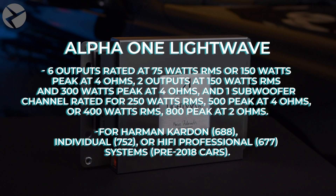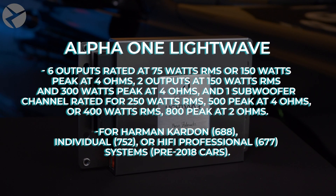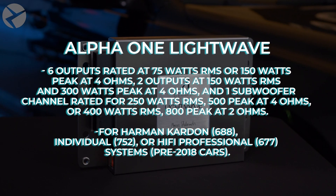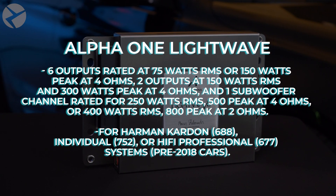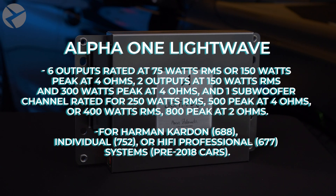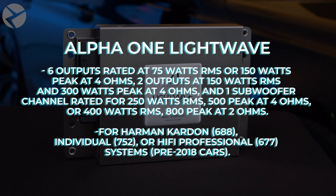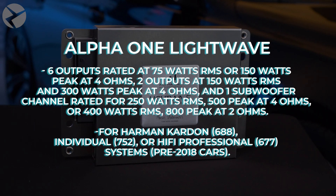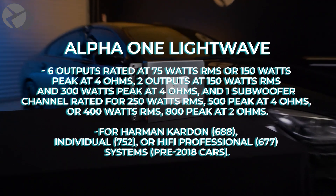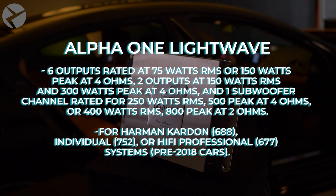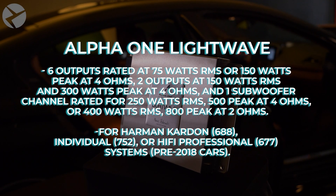The Lightwave has six outputs rated at 75 watts RMS or 150 watts peak at 4 ohms, two outputs at 150 watts RMS and 300 watts peak at 4 ohms, and one subwoofer channel rated at 250 watts RMS and 500 watts peak at 4 ohms, or 400 watts RMS and 800 watts peak at 2 ohms.